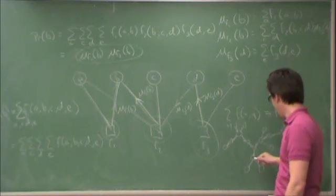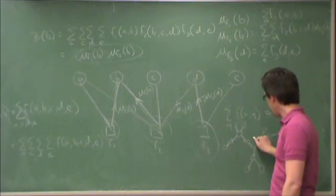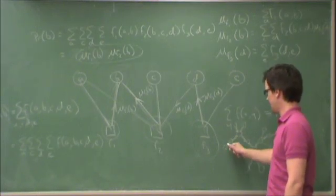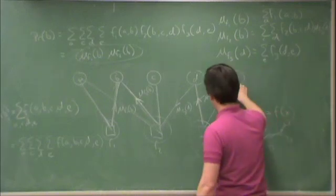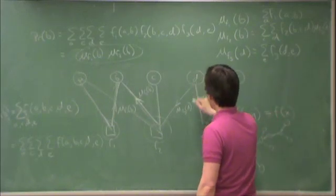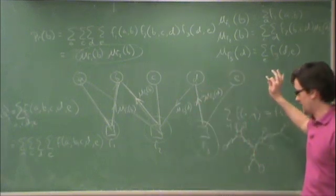Furthermore, you'll notice that, basically, each time I pass a message, I cut the graph. So, for instance, once I pass this message to D, then I can forget about everything on this side of the graph.